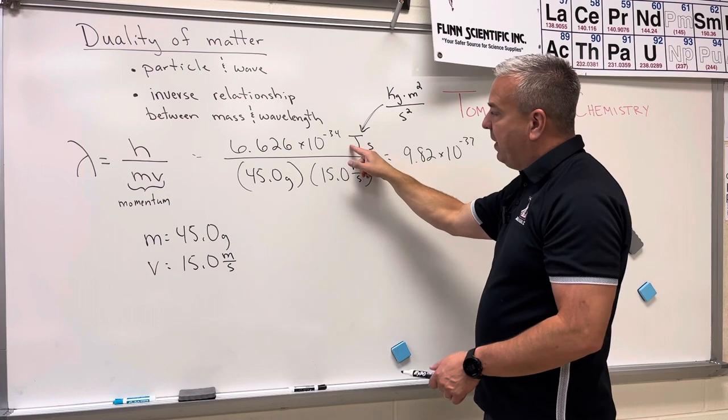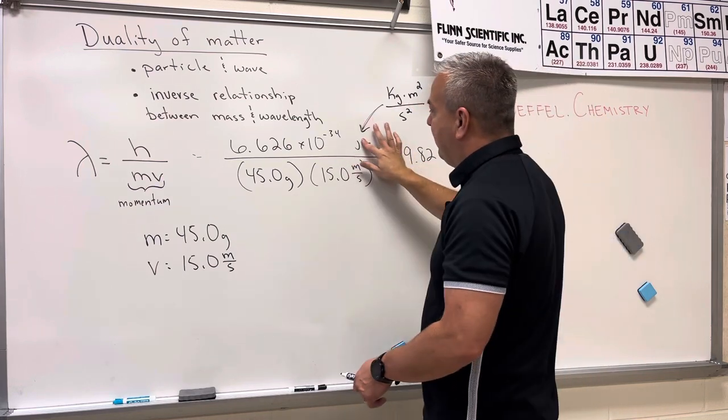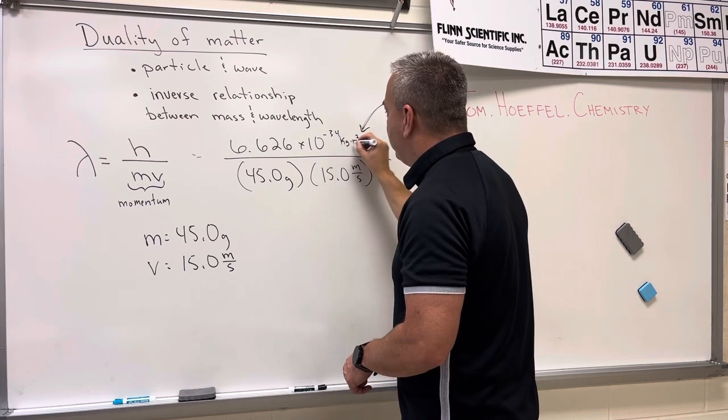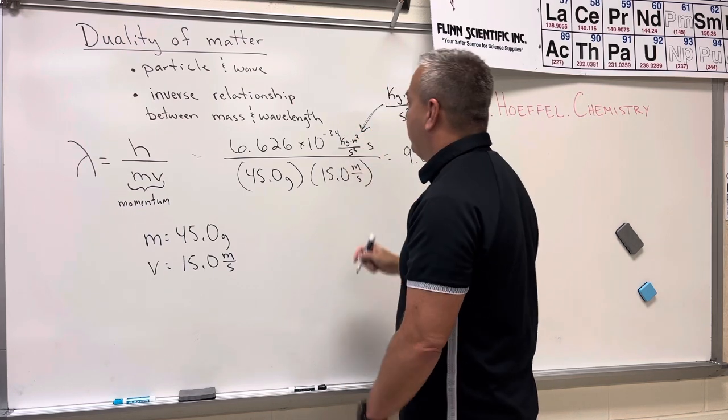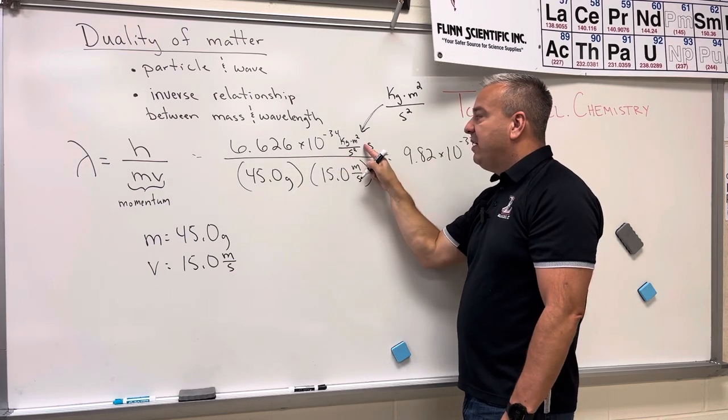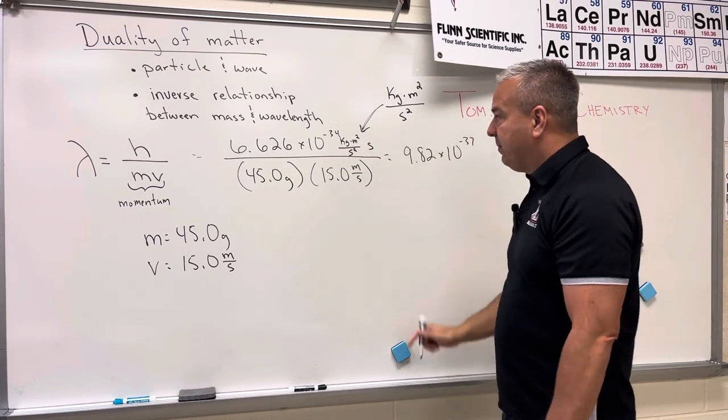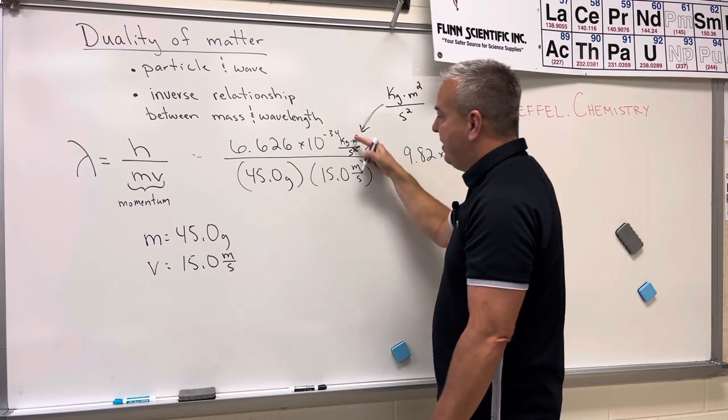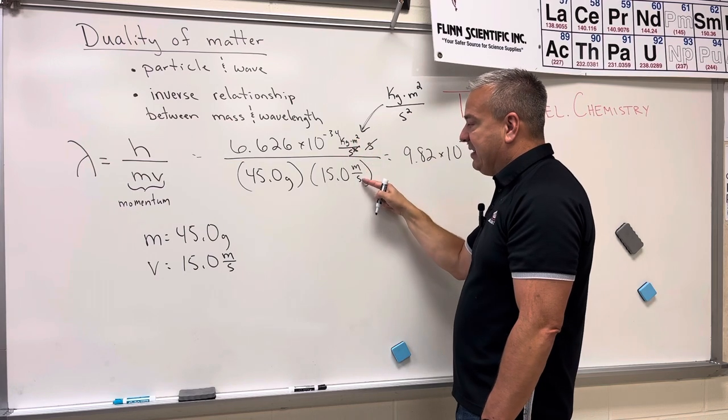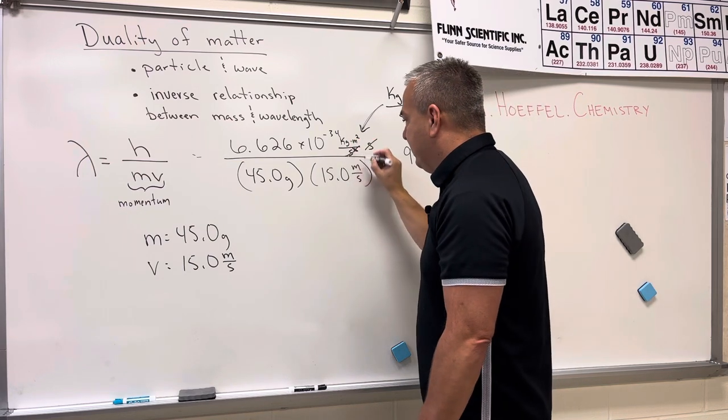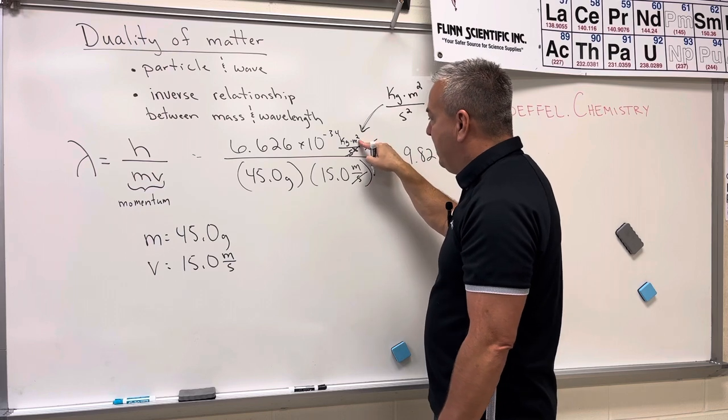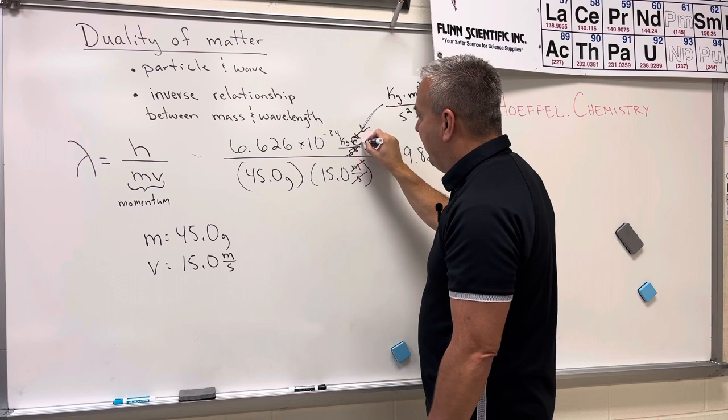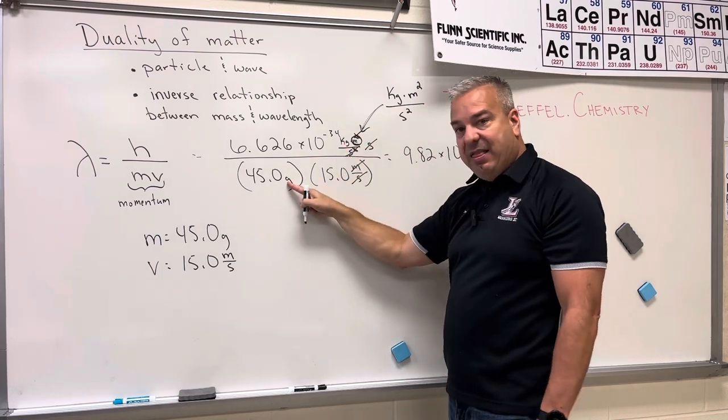So what I'm going to do is I'm going to erase the joule here, and I'm going to plug these units in. Instead of the joule, I'm going to do kilograms times meters squared over seconds squared. Now remember, Planck's constant was the joule times the second. So this second is going to cancel out one of these seconds, and then this per second is going to cancel out this per second. One of the meters is going to cancel out this meter, and we're going to be left with just one meter and the kilogram and the gram.